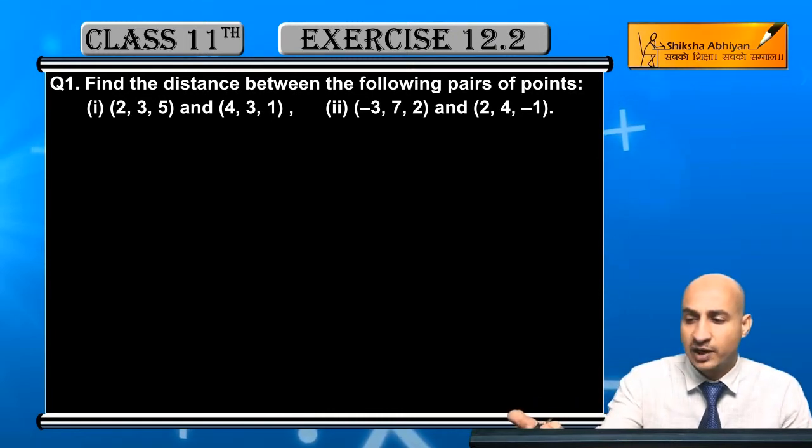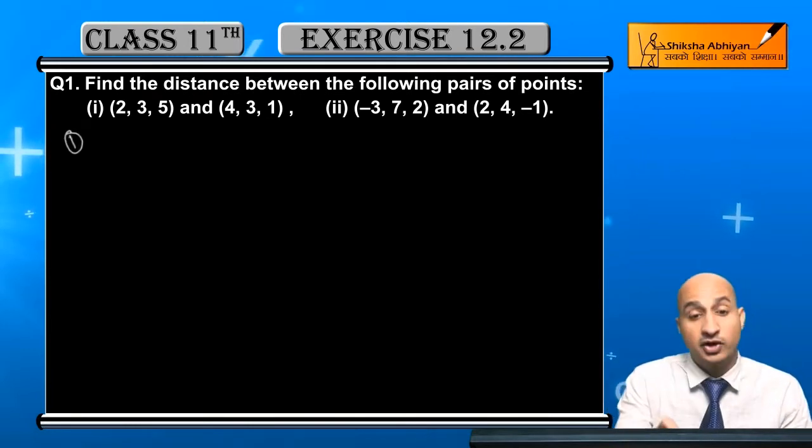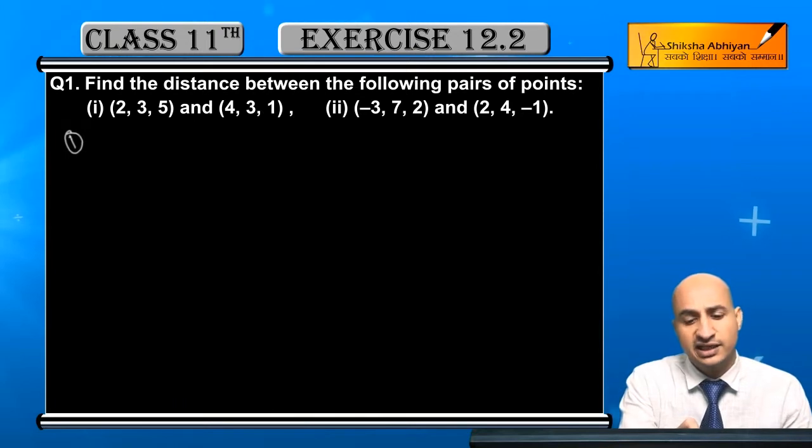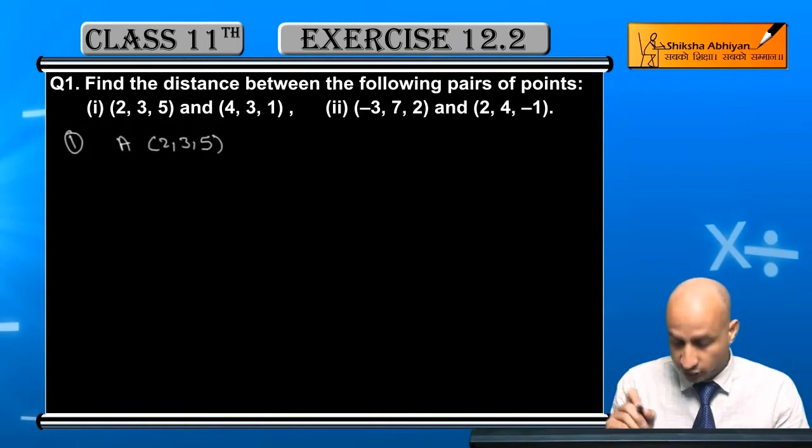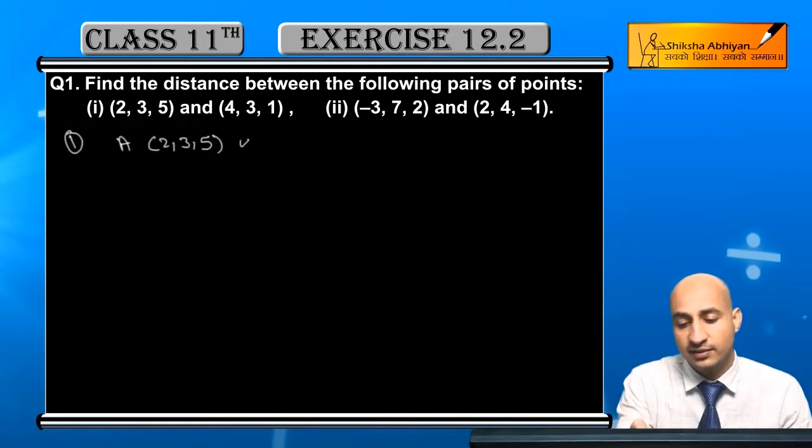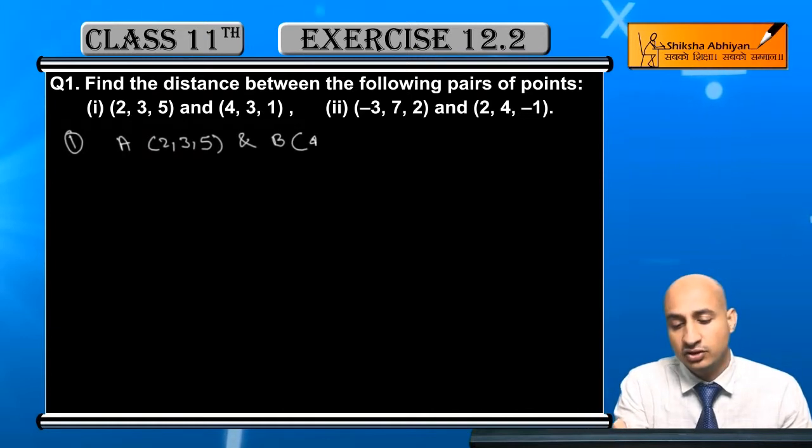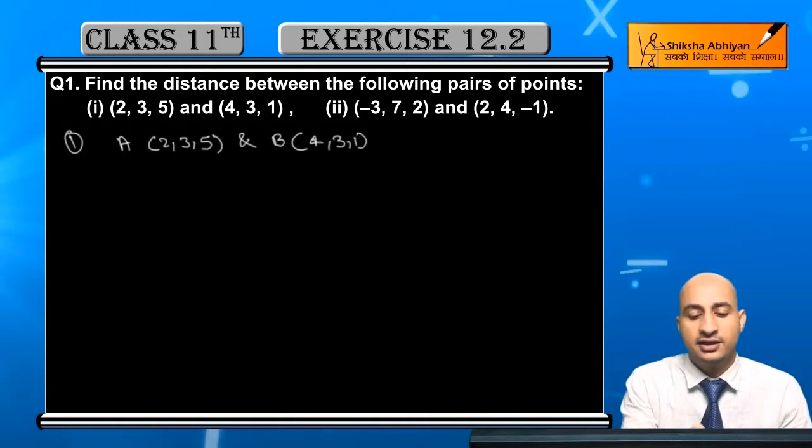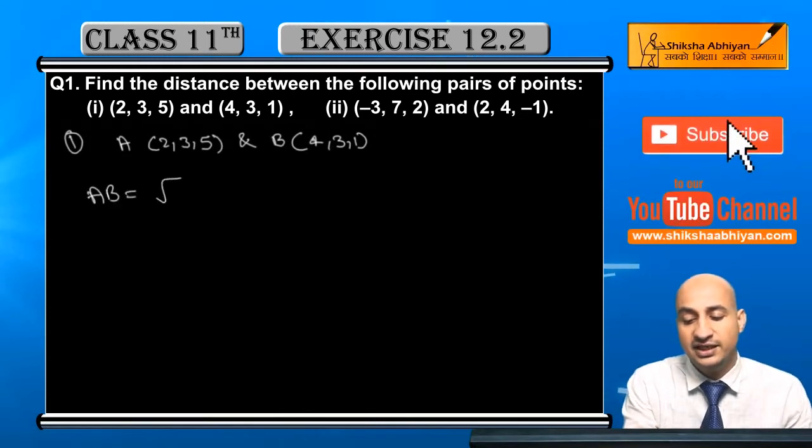In the first part of this question, I will give the points. This is our first point, 2, 3, 5. This is our first point and next is, and B is, 4, 3, 1. Now student, AB will be, by distance formula AB is.